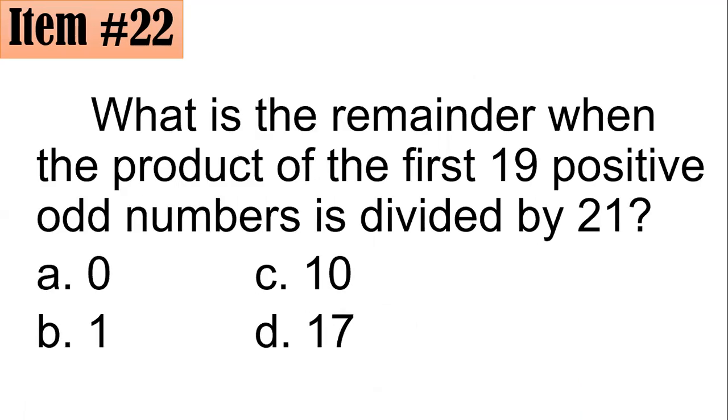What is the remainder when the product of the first 19 positive odd numbers is divided by 21? Is it 0, 1, 10, or 17?